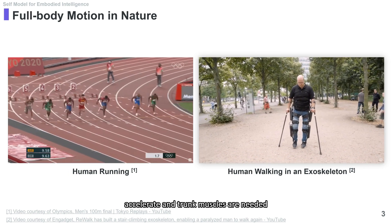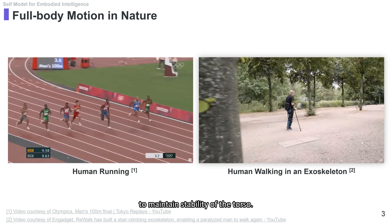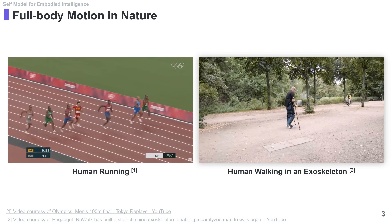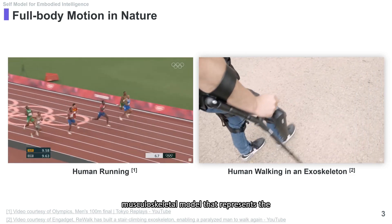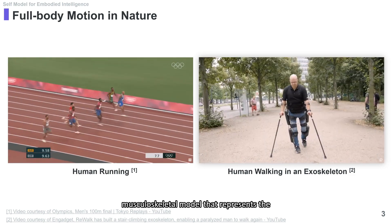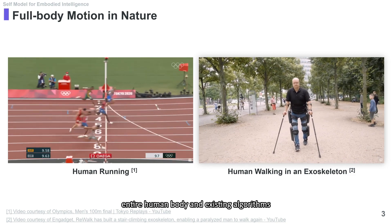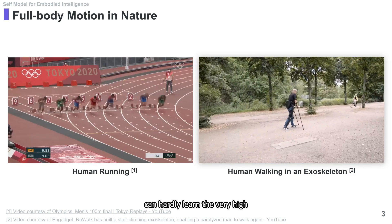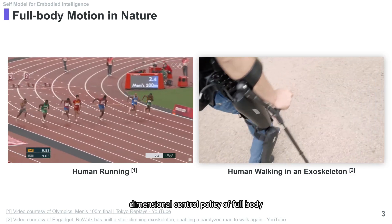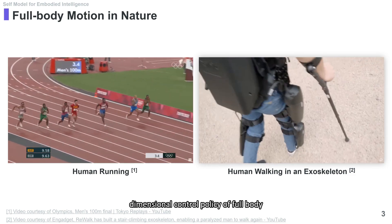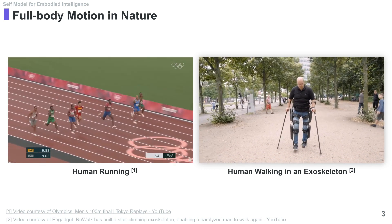Trunk muscles are needed to maintain stability of the torso. However, there is no available musculoskeletal model that represents the entire human body, and existing algorithms can hardly learn the very high-dimensional control policy of full-body human musculoskeletal movements.